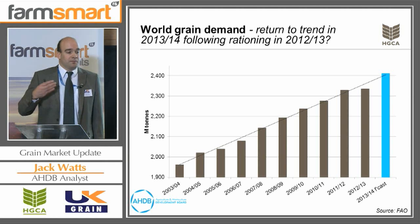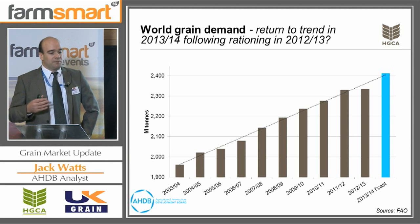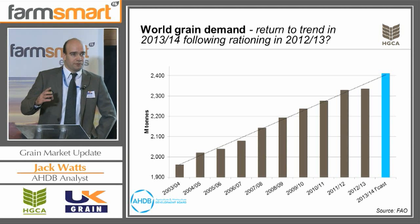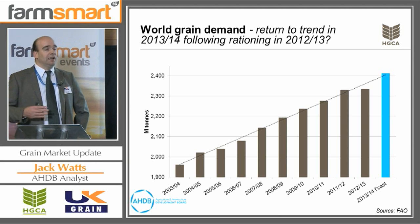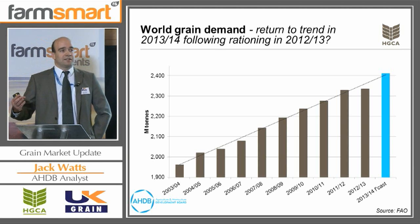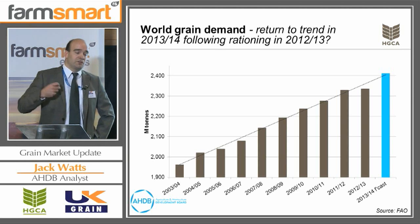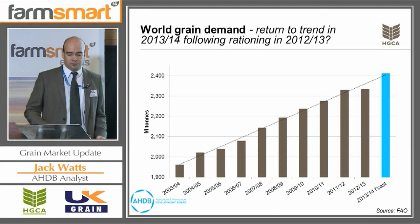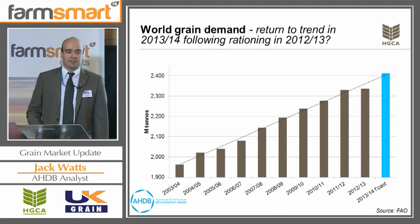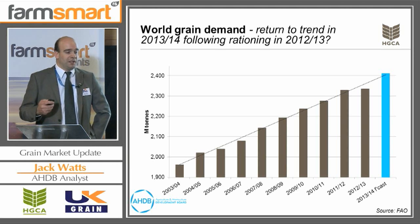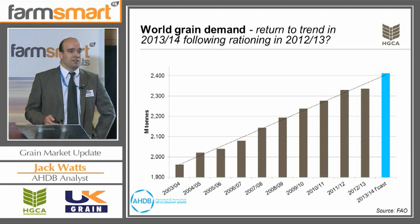As prices have fallen, the grain becomes more affordable and so we're back on trend. There's a bit of a risk here because I'm not so sure if we can see a season of rationing and then go back straight into seeing this demand growth as if nothing happened at all last season. So it remains to be seen how this turns out, but it is a big area of uncertainty for the market.